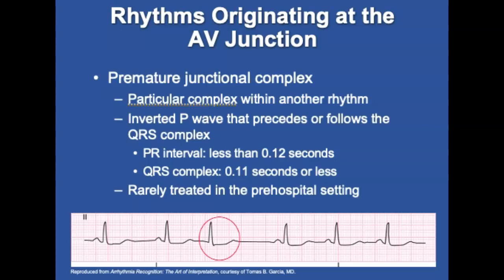A premature junctional complex (PJC) is not a dysrhythmia but an early complex appearing within a regular rhythm. PJCs are ectopic complexes arising from a site other than the SA node. The rate depends on the underlying rhythm and is irregular. If a P wave is present, it will be inverted and may either precede or follow the QRS complex. PJCs are characterized by a PRI less than 0.12 seconds if present, and a QRS of 0.11 seconds or less. PJCs do not normally require treatment; possible symptoms include perceived skip beats, lightheadedness, or dizziness.